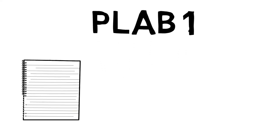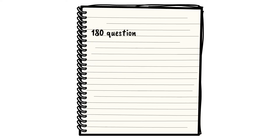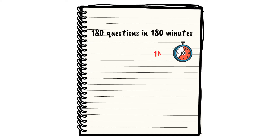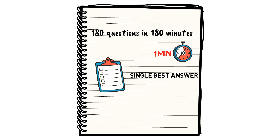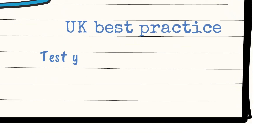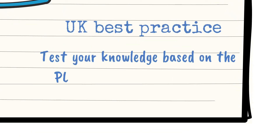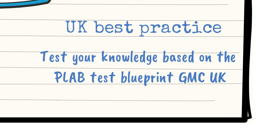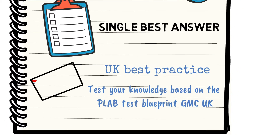Let's talk more about PLAB Part 1. PLAB 1 is a written exam consisting of 180 questions in 180 minutes, which leaves you exactly about one minute per question. You have to choose the single best answer out of five that's given. The answers are based on UK's best practice, and the objective is to test your knowledge based on the PLAB test blueprint provided by the General Medical Council UK, also known as GMC UK.